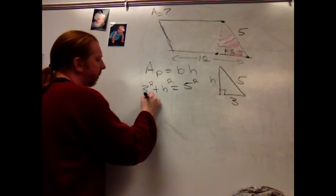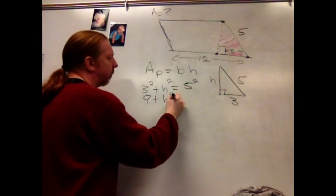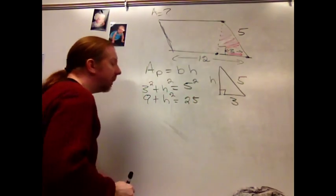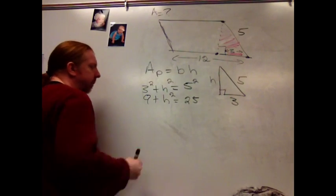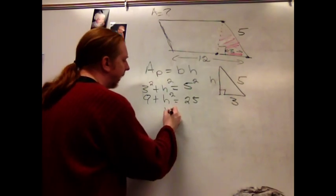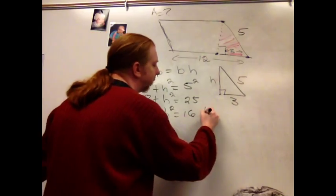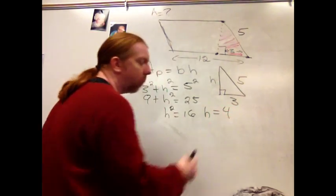Algebra happens, so 9 plus h squared equals 25. It's tempting to yada, yada, yada my way through this, but we'll work it out. h squared, therefore, is 16, and therefore h is equal to 4.